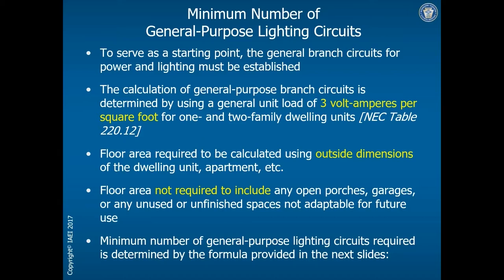For the 2017 code, we go to Table 220.12. In the 2017, 2014, 2011 code and so on, that table gives us a number of occupancies, and each occupancy has a wattage per square foot value associated with it. It lists office buildings, churches, warehouses, gymnasiums, and all kinds of occupancies. One of those occupancies is a dwelling unit, and that table tells us we need 3 watts per square foot — or 3 volt-amps per square foot, since a volt-amp equals a watt — for the lighting load at a one or two family dwelling unit.